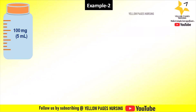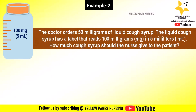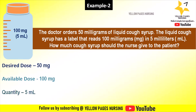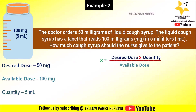Now let's move on to the second example. The doctor orders 50 milligrams of liquid cup syrup. The liquid cup syrup has a label that reads 100 milligrams in 5 milliliters. How much cup syrup should the nurse give to the patient? Here the desired dose is 50 milligrams, available dose is 100 milligrams, and the quantity is 5 ml.